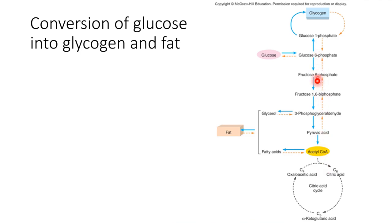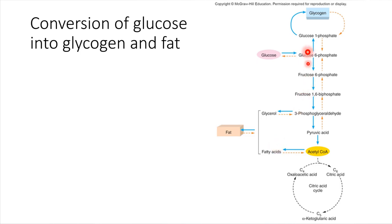Glucose could alternatively be processed to form other substances. We could use that glucose to form glycerol molecules, and we could also grab some of this acetyl-CoA and build it up into the form of fatty acid chains. A glycerol and three fatty acid chains connected together give us a triglyceride — so this is actually a way that the cell can take glucose and convert it into fats, so lipids.